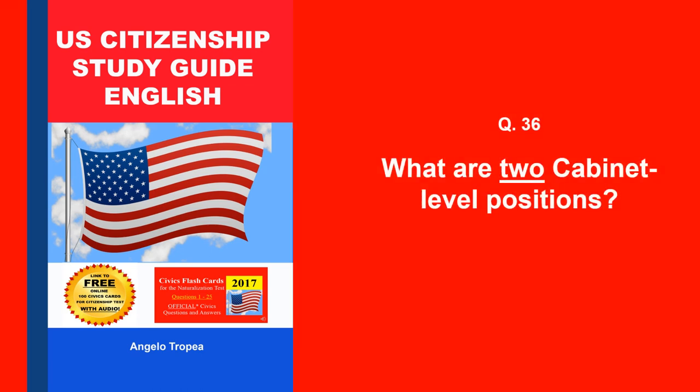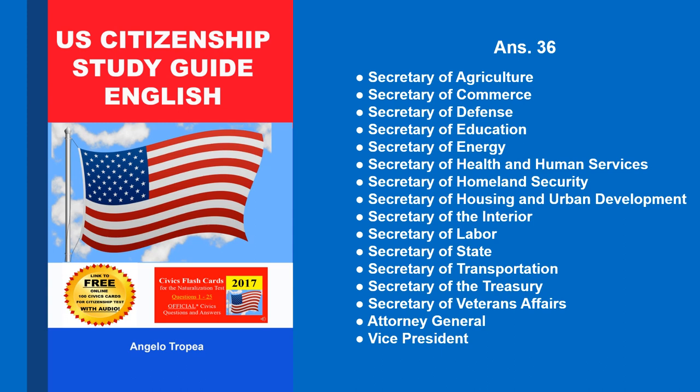What are two cabinet-level positions? Secretary of Agriculture, Secretary of Commerce, Secretary of Defense, Secretary of Education, Secretary of Energy, Secretary of Health and Human Services, Secretary of Homeland Security, Secretary of Housing and Urban Development, Secretary of the Interior, Secretary of Labor, Secretary of State, Secretary of Transportation, Secretary of the Treasury, Secretary of Veterans Affairs, Attorney General, Vice President.